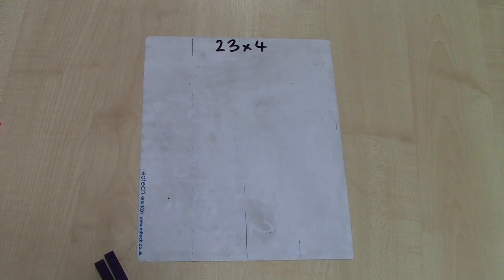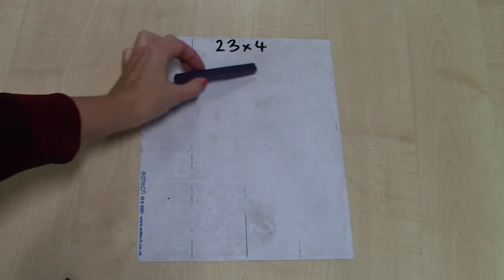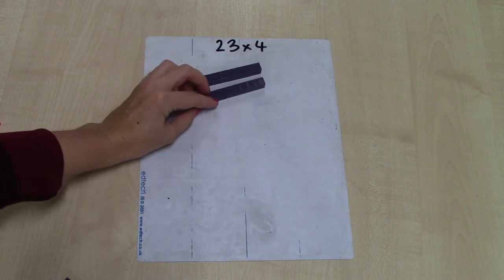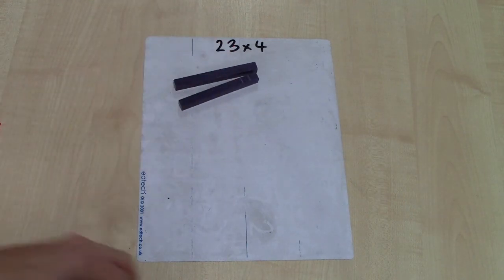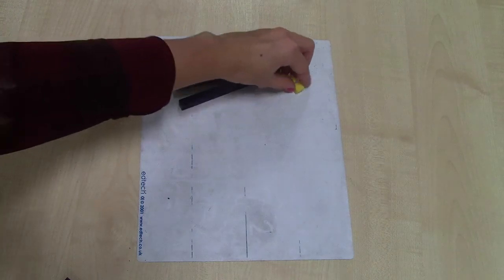I'm going to start by making 23. Using my place value knowledge, I know that 23 means I've got two 10s—10, 20—and 3 units: one, two, three.